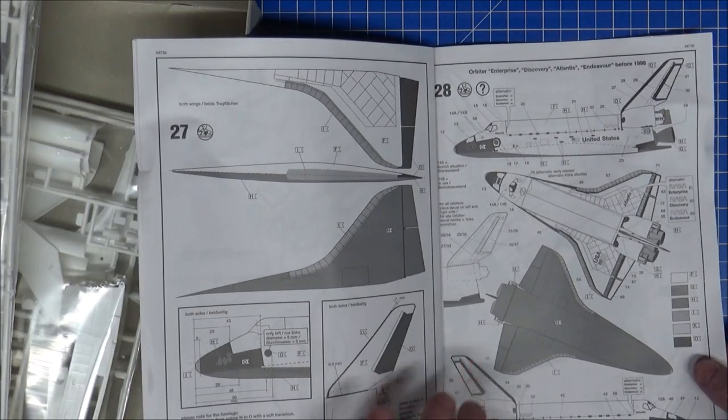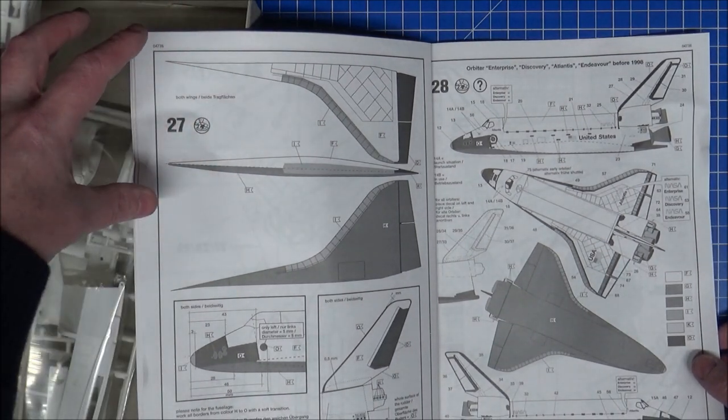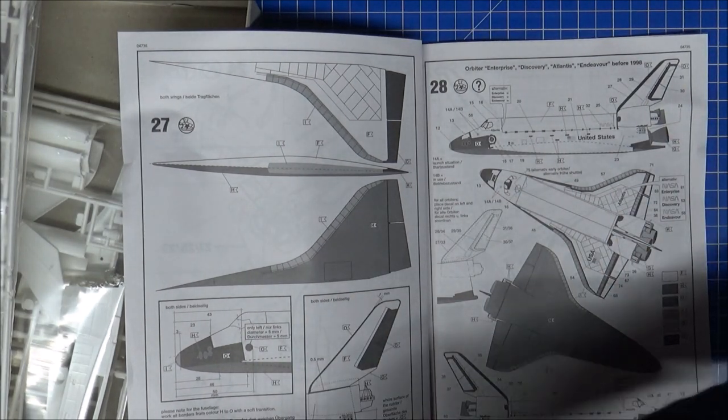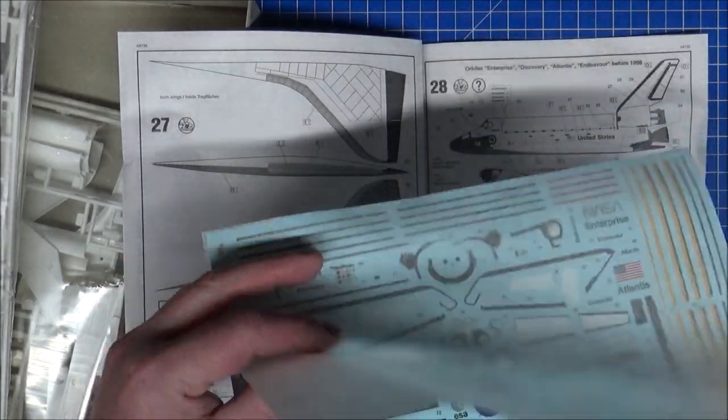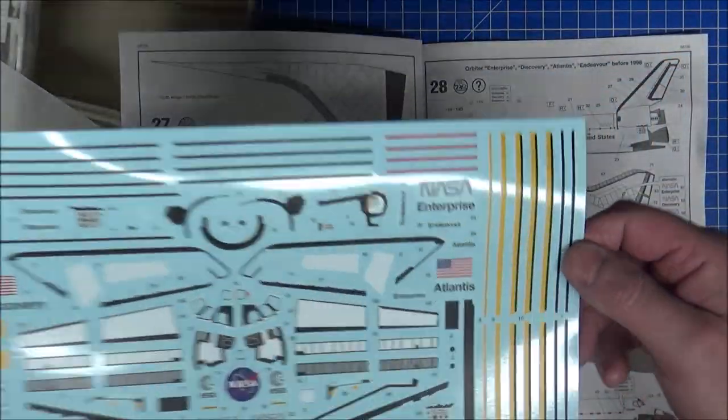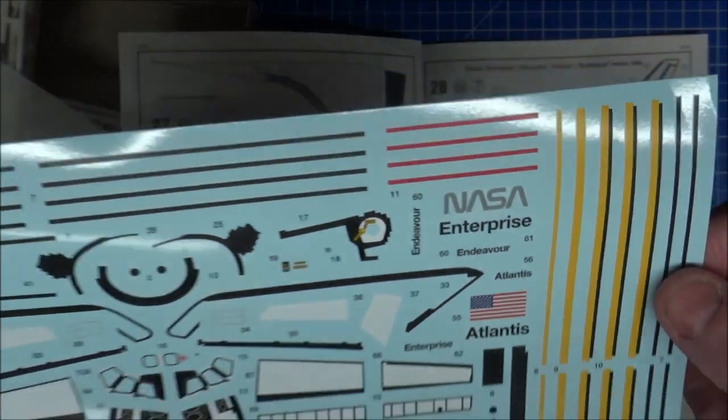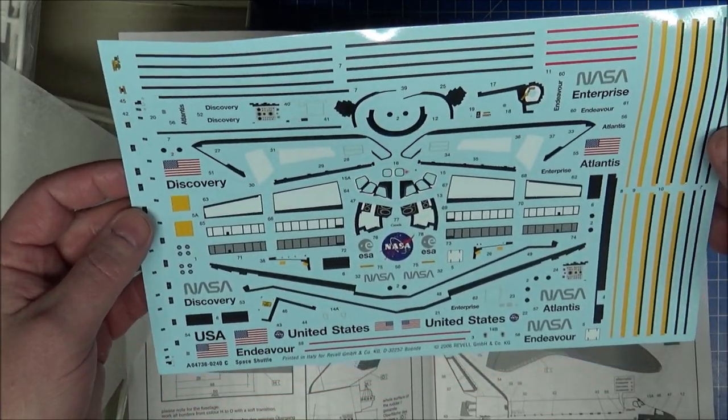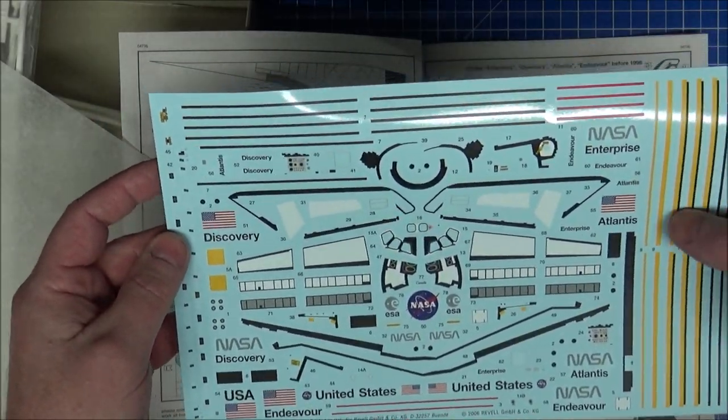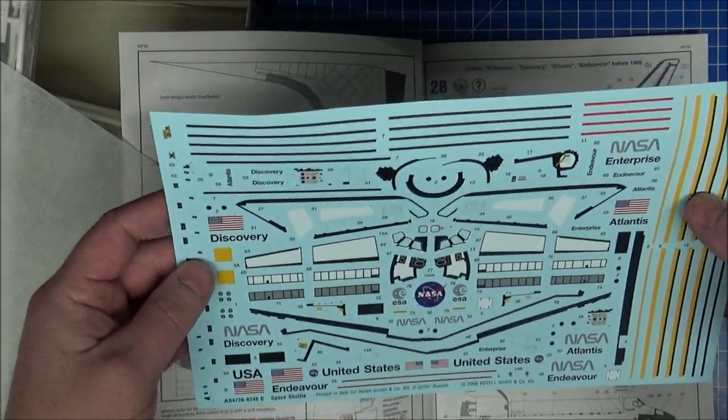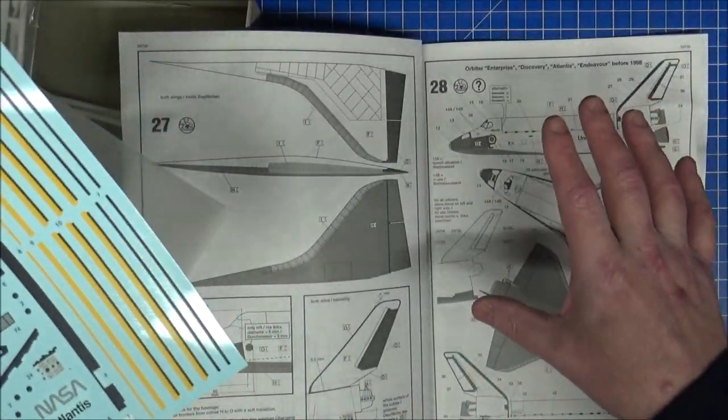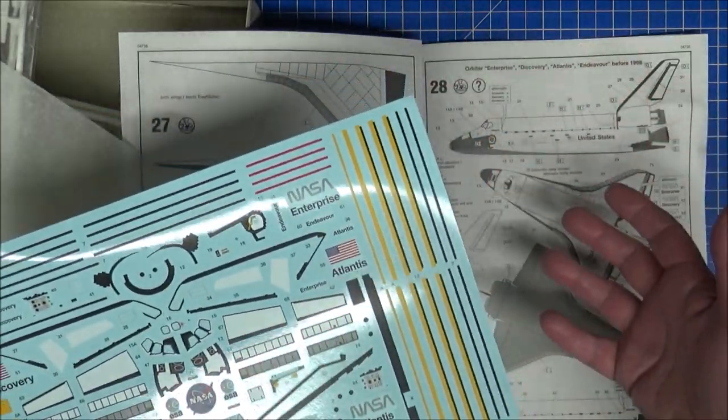We have more instructions of the colors for painting. The thing with the decal sheet is, I'm a Trekkie, so I'm going to make this as a mock-up of the Enterprise. I'm not going to do Challenger, I'm not going to do Columbia, God rest their souls. Atlantis, Endeavor, yes, maybe Discovery.